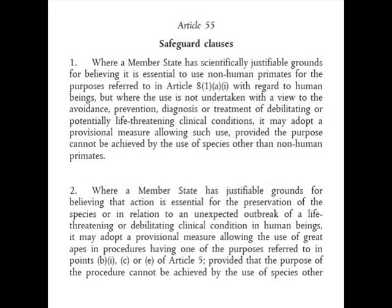Here is Article 55, safeguard clauses, number two. It reads: where a member state has justifiable grounds for believing that an action is essential for the preservation of species, or in relation to an unexpected outbreak of a life-threatening or debilitating clinical condition in human beings, it may adopt a provisional measure allowing the use of great apes in procedures having one of the purposes referred to in points B1, C or E of Article 5, provided that the purpose of the procedure cannot be achieved by the use of species other than great apes or by the use of alternative methods. The reference to Article 5 B1 shall not be taken to include reference to animals and plants.